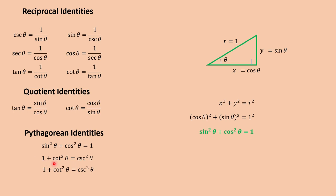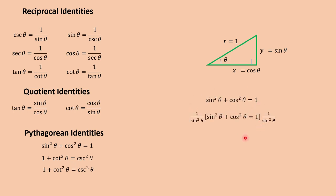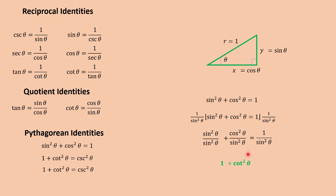How did we get 1 plus cotangent squared theta is equal to cosecant squared theta? From this equation, we multiply 1 over sine squared theta to both sides. So we have sine squared theta over sine squared theta plus cosine squared theta over sine squared theta is equal to 1 over sine squared theta. Simplifying, this would be 1. Cosine squared over sine squared theta is equal to cotangent squared theta by quotient identities. And 1 over sine squared theta is equal to cosecant squared theta by reciprocal identities.